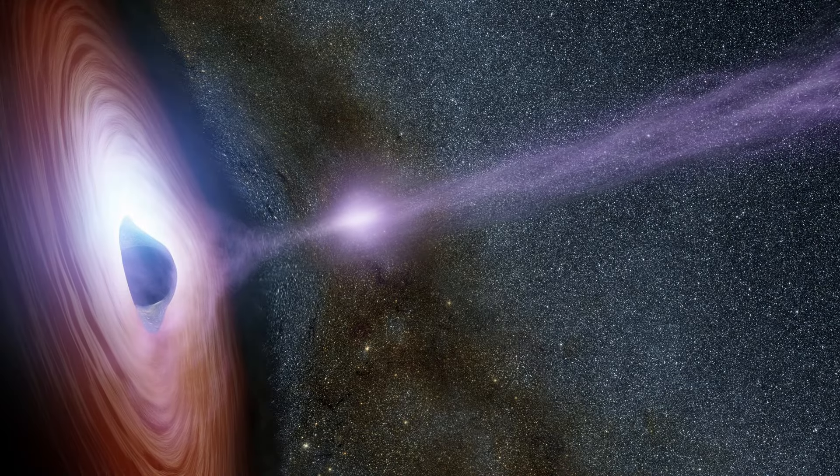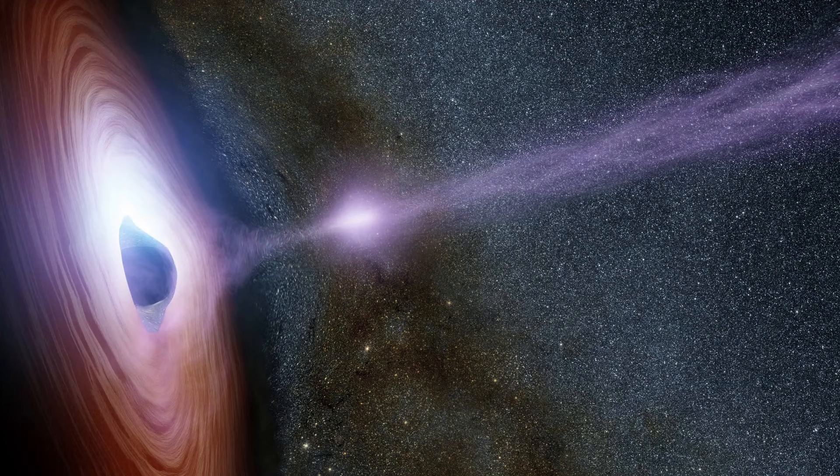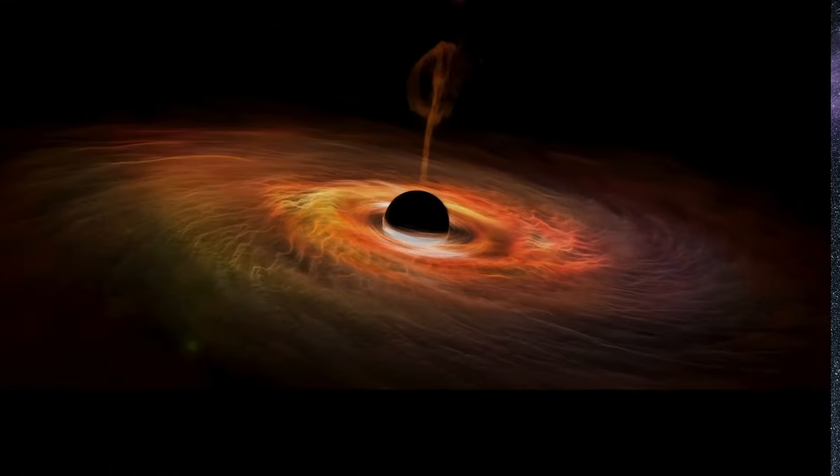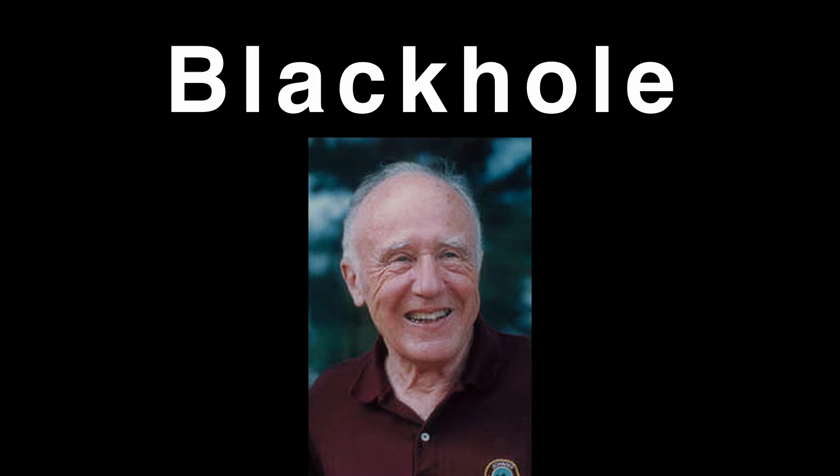Some black holes eject jets of plasma at nearly the speed of light, which are called relativistic jets. These are produced when matter falls inside black holes. Yeah, they are messy eaters.